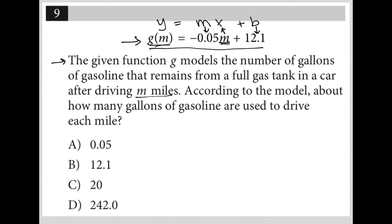Okay, perfect. So I'm glad I paid attention to y equals mx plus b because each mile, that's a rate. The only rate involved in this equation is our slope. So we're using 0.05 gallons of gasoline per mile, and therefore our answer is choice A.